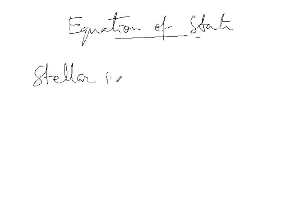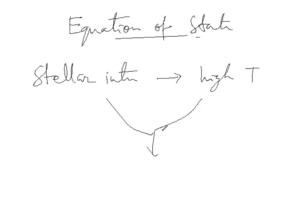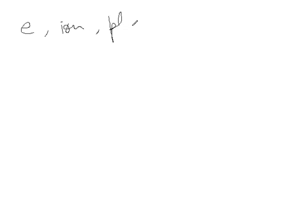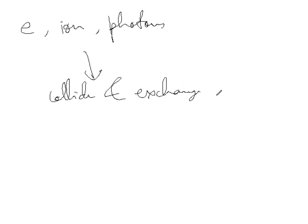In the stellar interior, we have high temperature. As a result, we have electrons, ions, as well as photons, and they are present at any radius r — almost everywhere. They collide with each other very frequently, and as a result of the collision, they exchange energy. So electrons, ions, and photons collide and exchange energy. And thus, local thermal equilibrium is achieved very quickly.